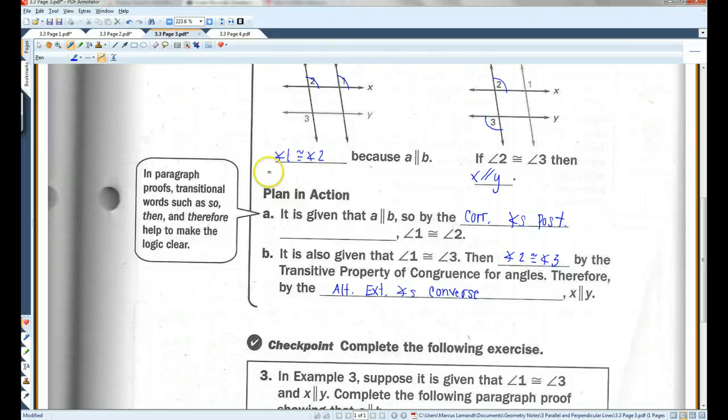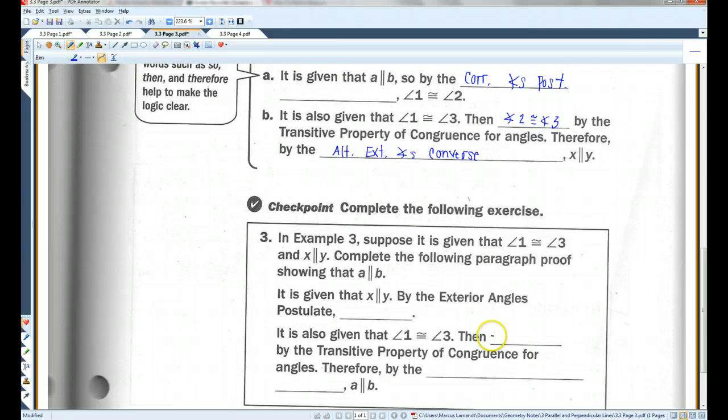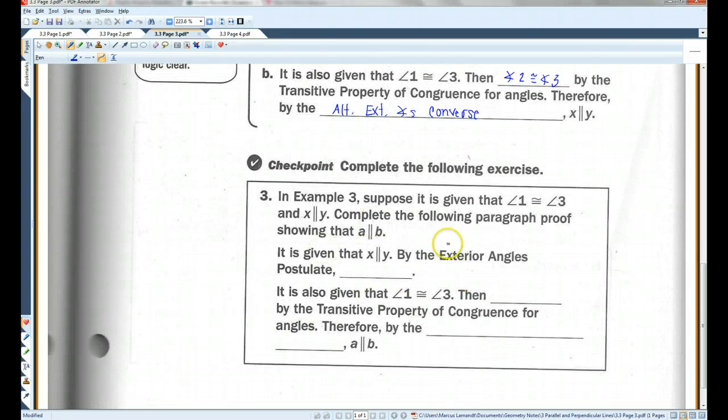Okay? So, this would be a paragraph proof. As you can see, it's not very different from a two-column proof. The only difference is, instead of statement and then reason, you put the statement and the reason all in one sentence. That's all. Okay? I'll let you guys do the checkpoint here. Let's go on to page 4.